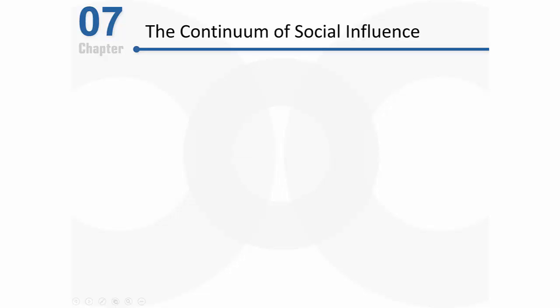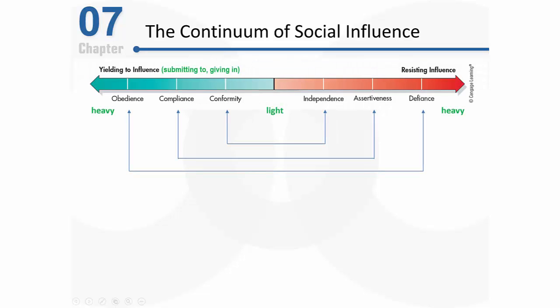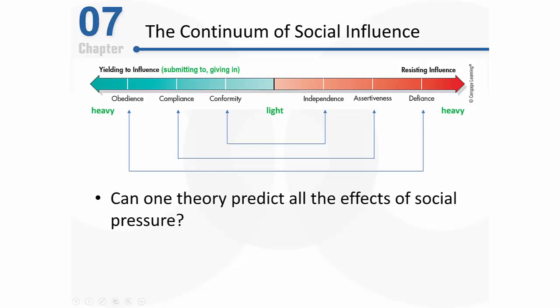We've discussed several different forms of social pressure, and that's what this continuum of social influence shows us. We've discussed conformity, where the social pressure is relatively light, and we've stepped that all the way up through compliance and into obedience, where the social pressure is really pretty heavy. When the social pressure is relatively intense, it takes quite a bit to resist it. Given all of the different forms of social influence we've discussed, it'd be interesting to see if one single theory could predict all of the effects of social pressure. And that's exactly what social impact theory tries to do.